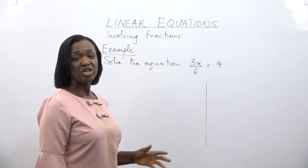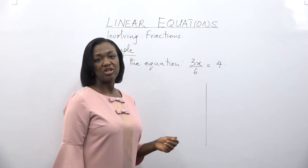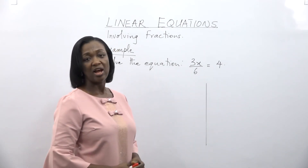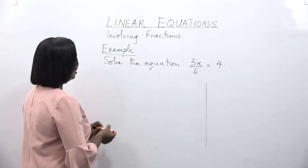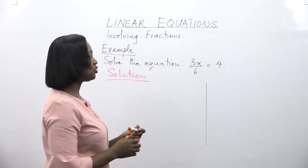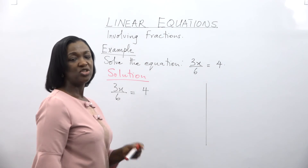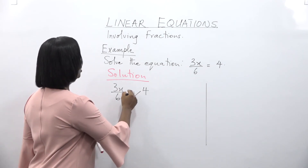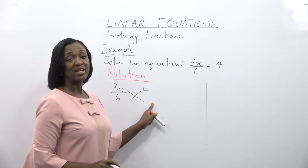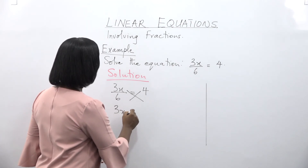In this example, we have an equation that involves fractions. What do you do when you have a fraction in your equation? You need to eliminate the fraction or the denominator part. There are two ways. We have 3x over 6 is equal to 4. One method is to cross multiply. If you cross multiply, you simply multiply 3x by 1 (the invisible denominator), and it becomes 3x equals 6 times 4, which gives us 24.